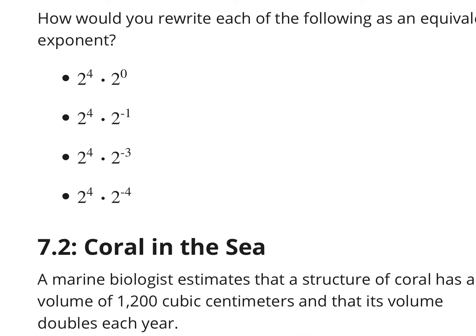For the first one, we do 2 to the 4th times 2 to the 0 power — we add 4 and 0, which is 4, so this is 2 to the 4th. For the next, we do 4 plus negative 1, which is 3, so this is 2 to the 3rd power. Then 4 plus negative 3 equals 1, so that's 2 to the 1st power. And 4 plus negative 4 is 0, giving us 2 to the 0 power.